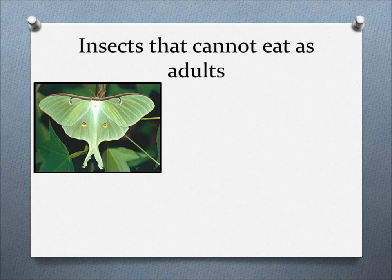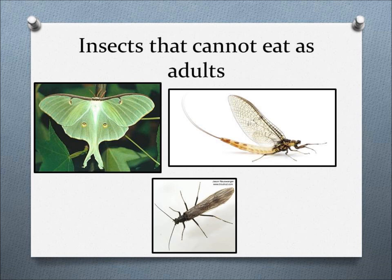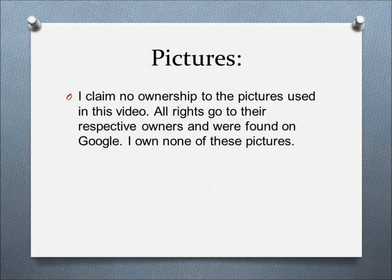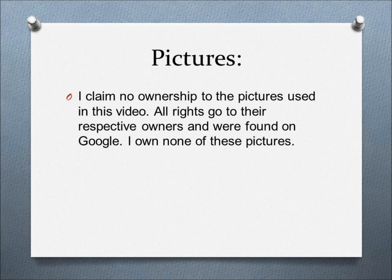Some insects, when they turn into adults — like luna moths, mayflies, and stoneflies — do not have any functional mouthparts at all. When they turn into an adult, they cannot eat. They just live long enough to mate and lay eggs. This concludes the video on insect heads. Next time, I will talk about the thorax and related anatomy. My name is Dr. N. Tom, and I hope you enjoy this video.